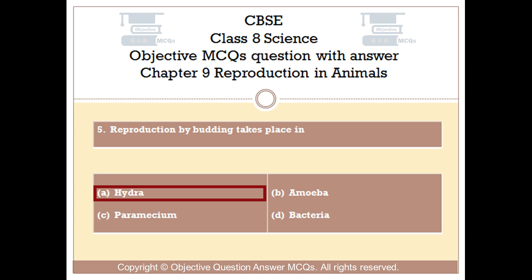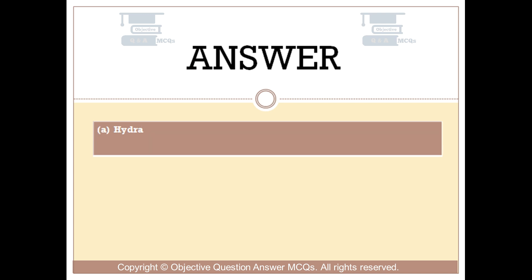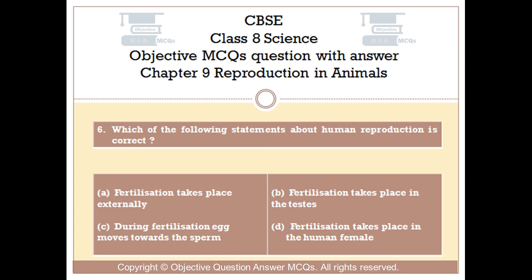Which of the following statements about human reproduction is correct? Option A: Fertilization takes place externally. Option B: Fertilization takes place in the testes. Option C: During fertilization, egg moves towards the sperm. Option D: Fertilization takes place in the human female.